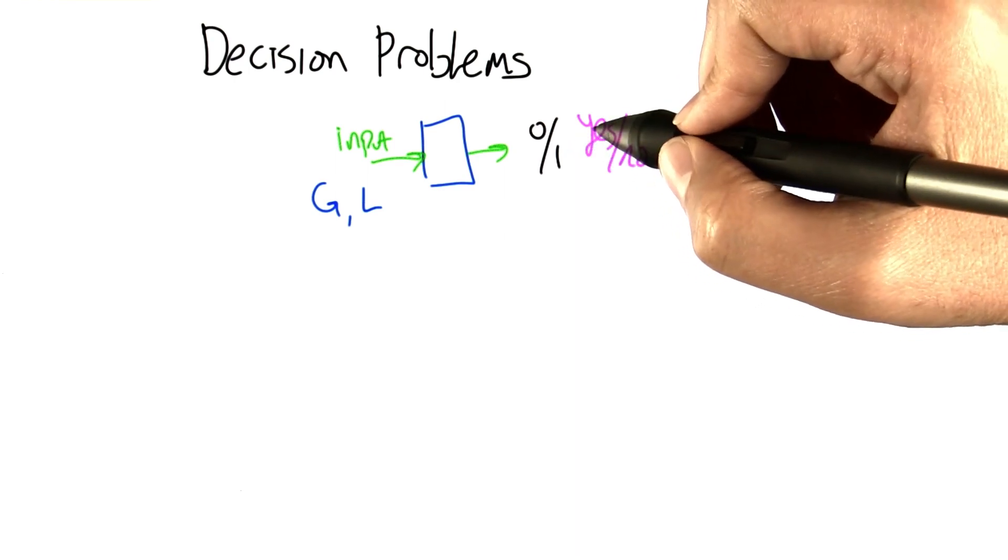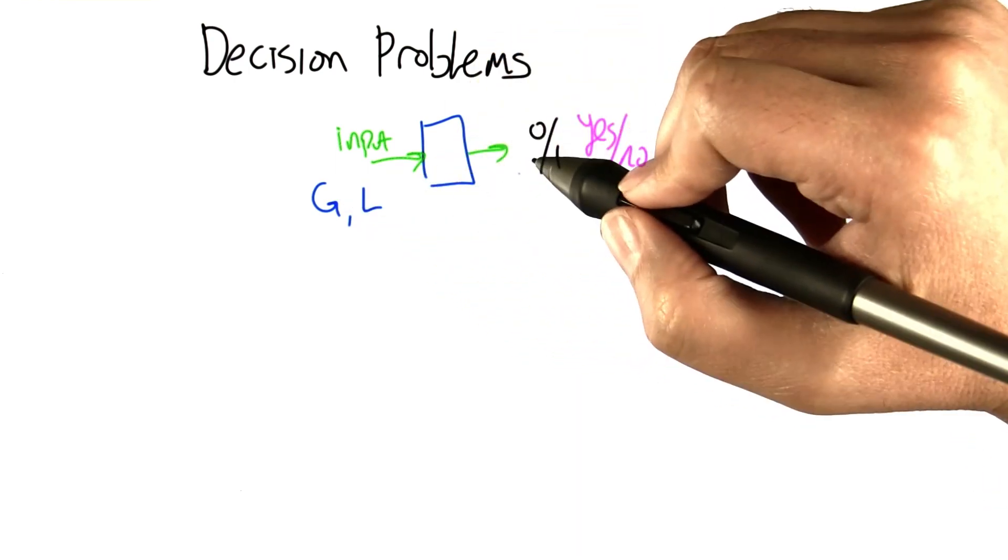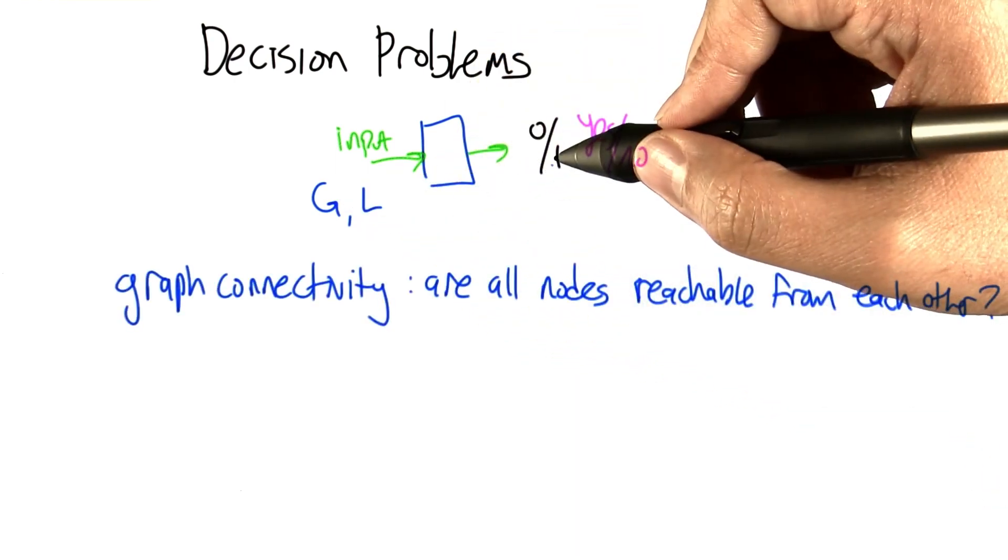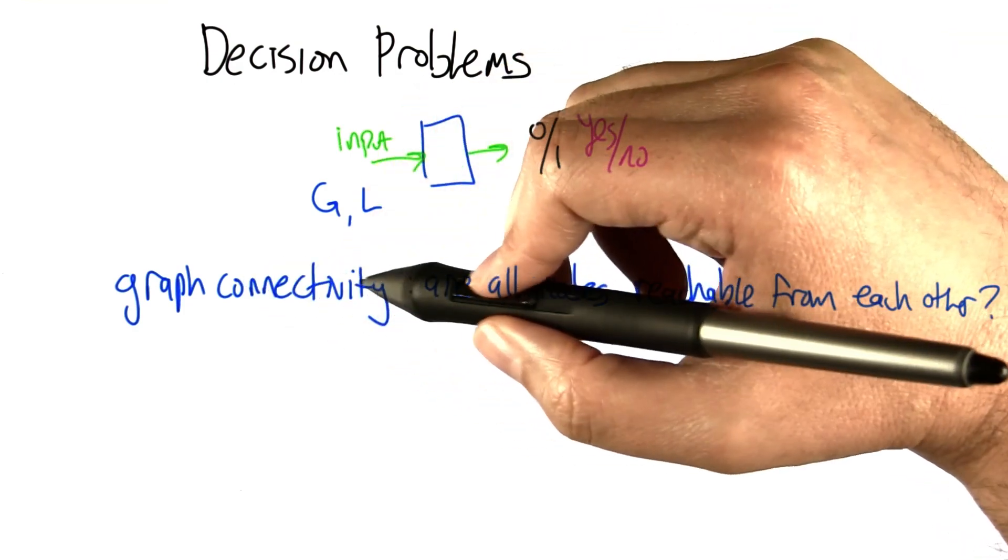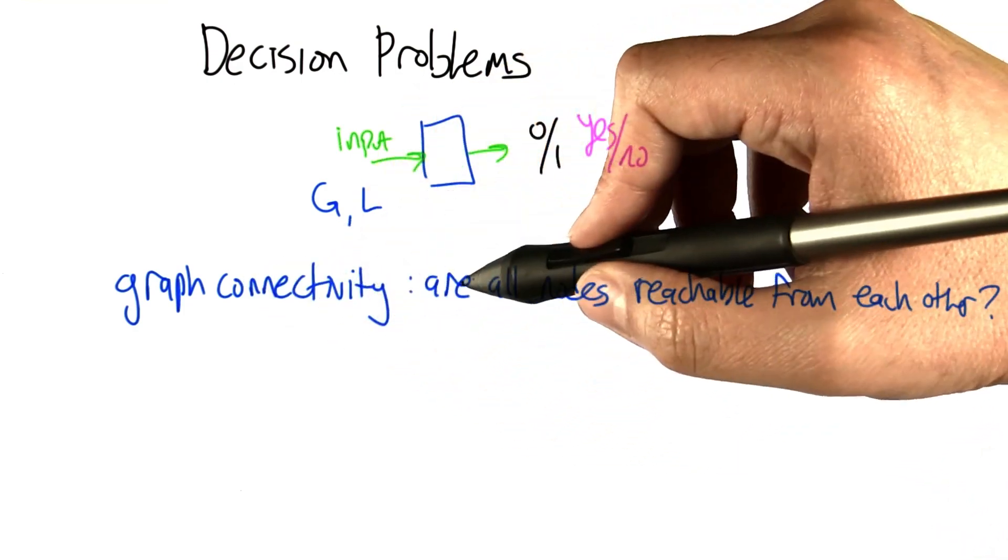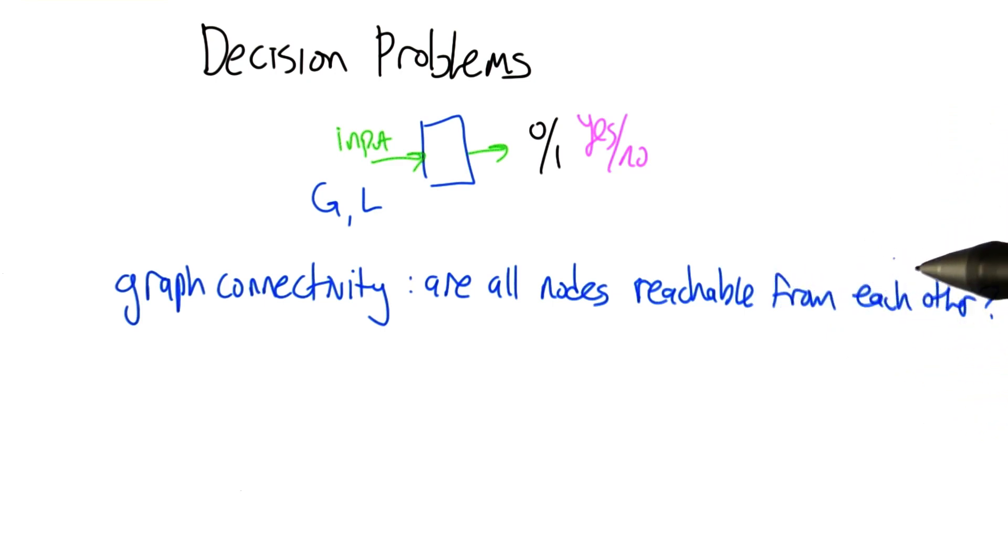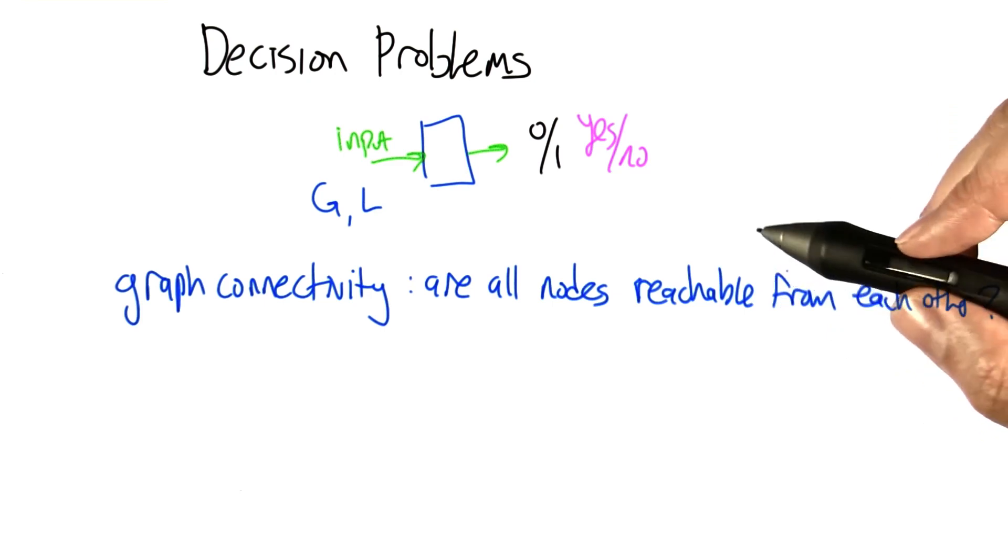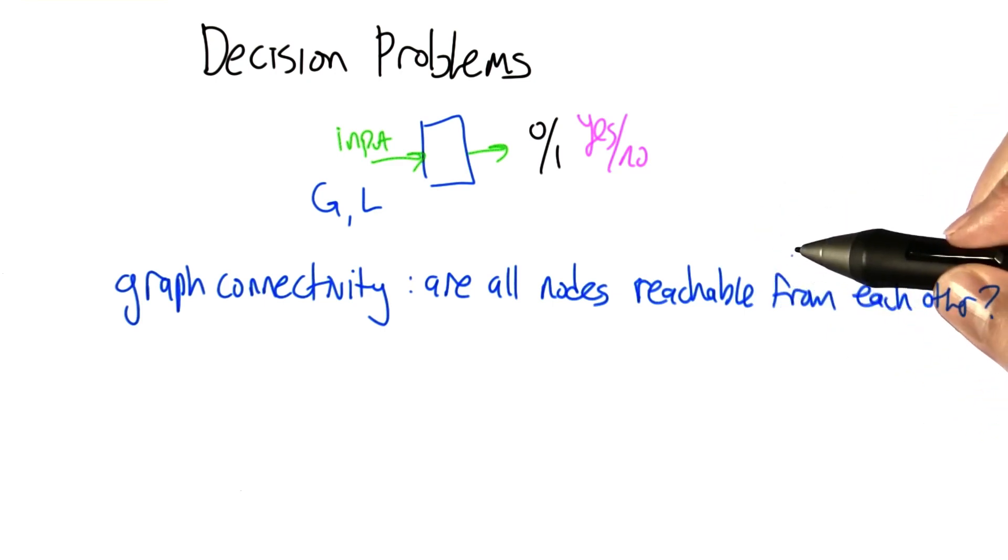So that's the sense in which it's making a decision. It's making a yes-no decision based on the inputs. An example is graph connectivity where you're given a graph and you're asked are all the nodes reachable from all the other nodes in the graph? And the answer is either yes or no, it's either connected or it's not connected.